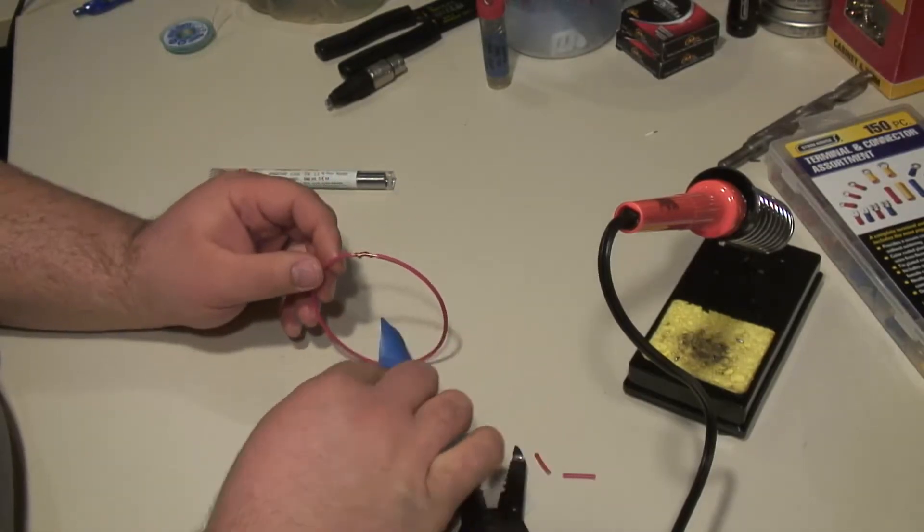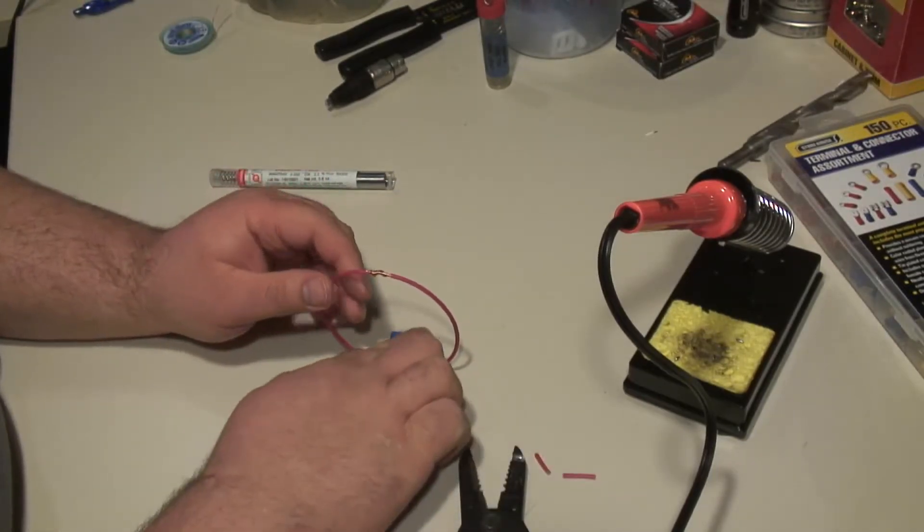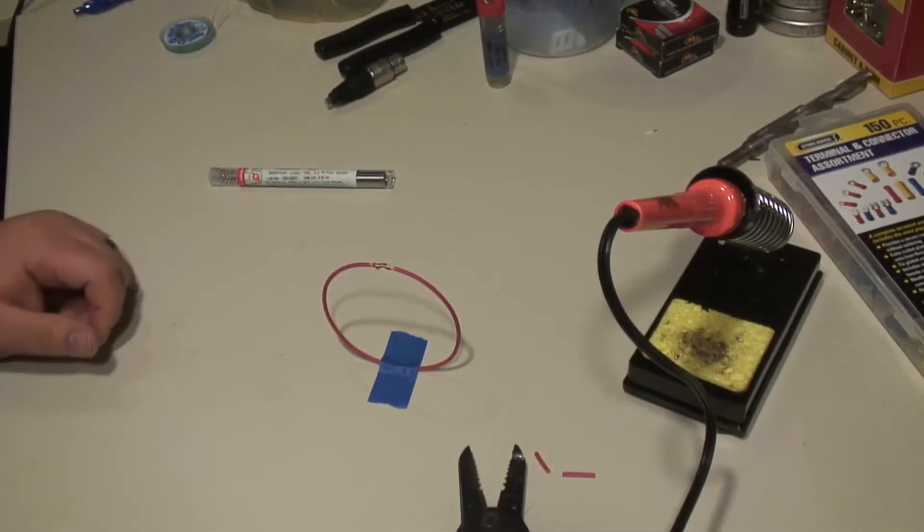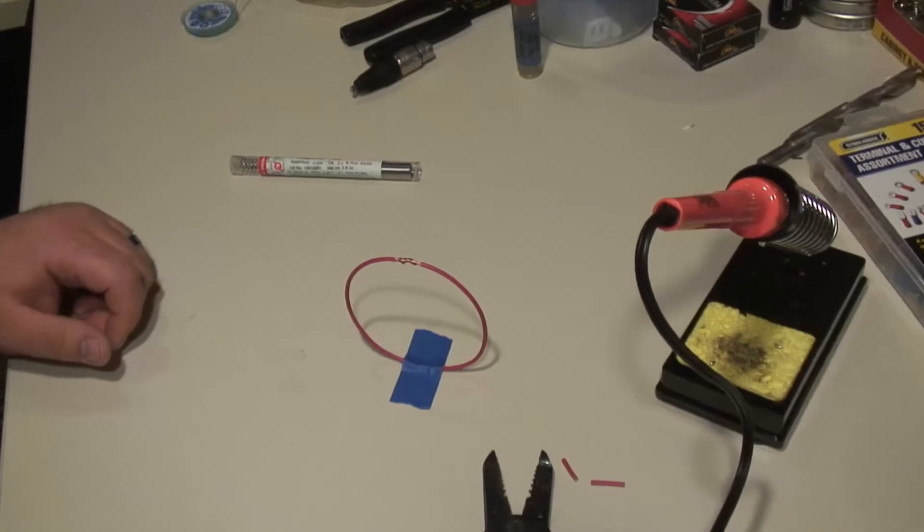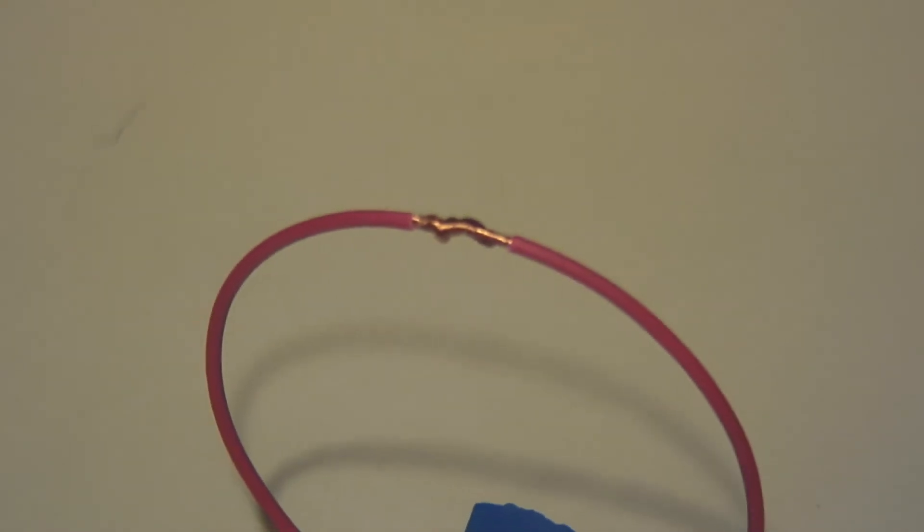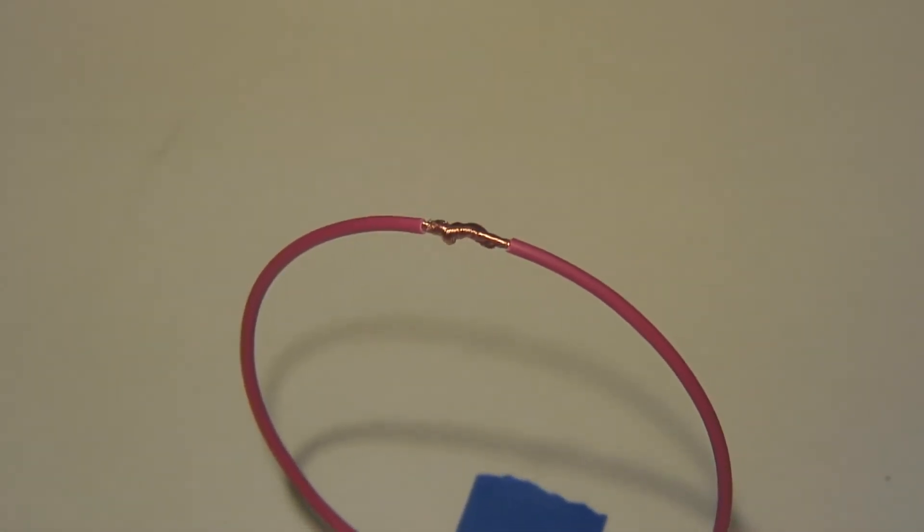I recommend putting shrink tube over anything that you're splicing. I think that works the best out of anything that I've tried. All right, let's zoom in here and look at our connection. My autofocus is having trouble. There we go.